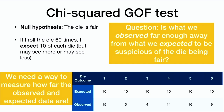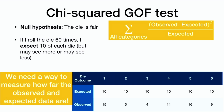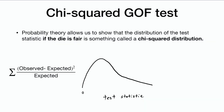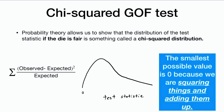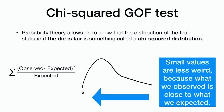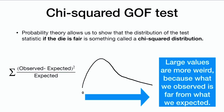We need a way to measure how far the observed and expected data are, just like we have for a z-test. We're going to compute a chi-squared statistic, which is calculated by summing over all categories the observed minus expected values squared, divided by the expected values. Probability theory allows us to show that the distribution of this test statistic, if the null hypothesis is true, follows a chi-squared distribution, which tends to look like a right-skewed distribution. The smallest possible value is 0 because we are squaring things and adding them up. Small values are less weird — that means observed and expected are close together — and large values are more weird.